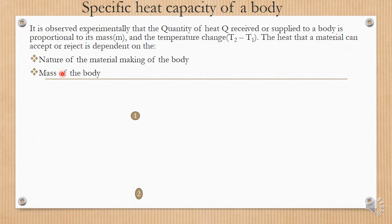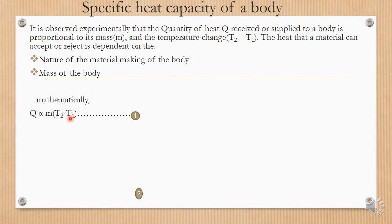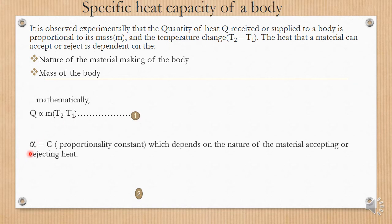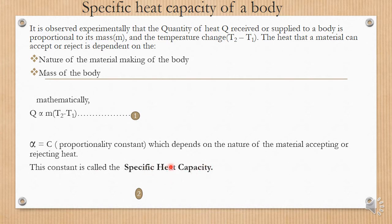The more the mass, the more heat is required to raise the temperature of the body. Mathematically, Q is directly proportional to the mass m and the temperature change (T2 minus T1), where T2 is the final temperature and T1 is the initial temperature. The constant of proportionality c depends on the nature of the material and is called the specific heat capacity. Hence Q equals c times m times the change in temperature.